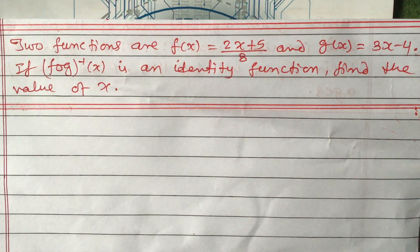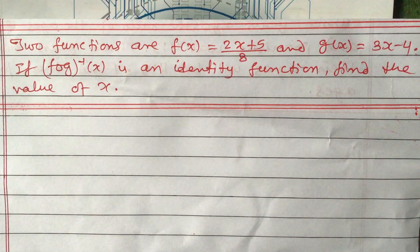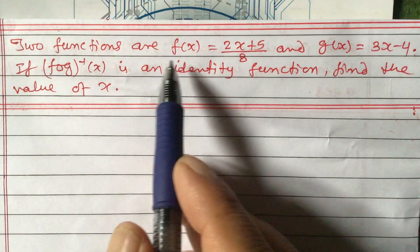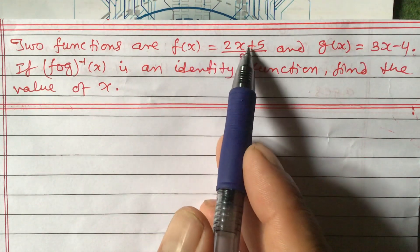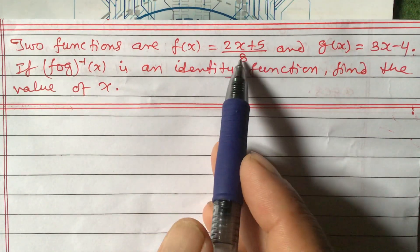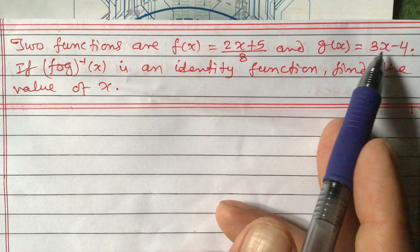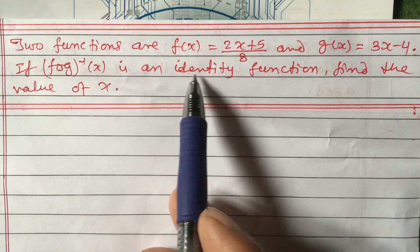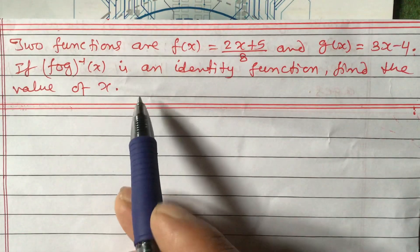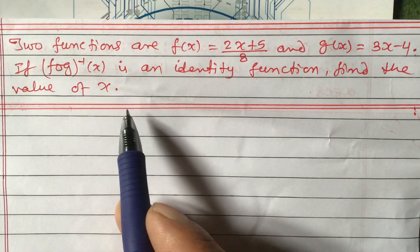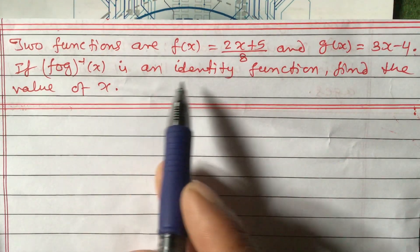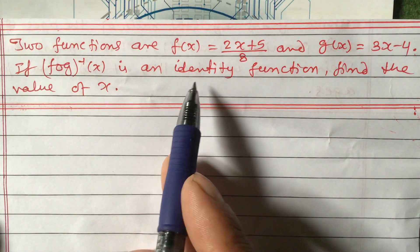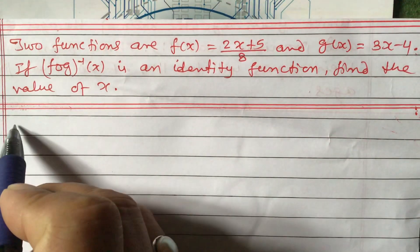Dear students, yesterday Harry Smith asked me a question related to functions for class 10. The question is: two functions are f(x) = (2x + 5) / 8 and g(x) = 3x - 4. If f of g inverse x is an identity function, find the value of x. I think he might not have known about the identity function, so I will explain this here.